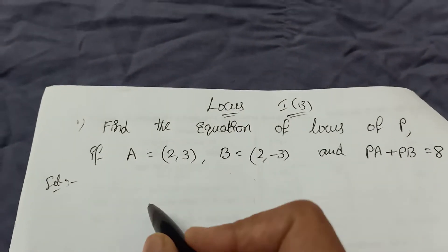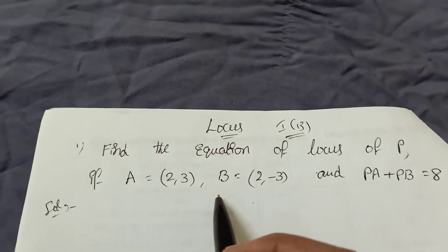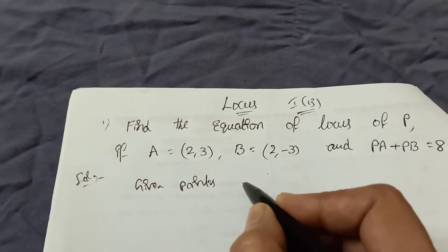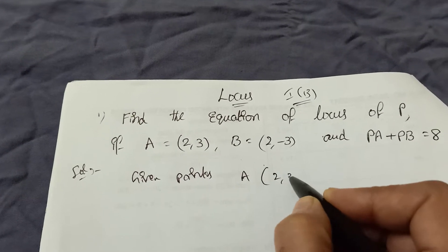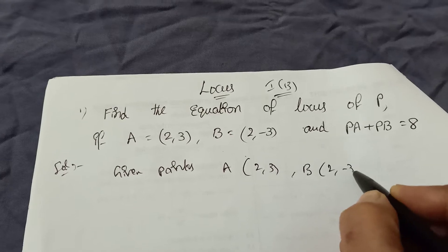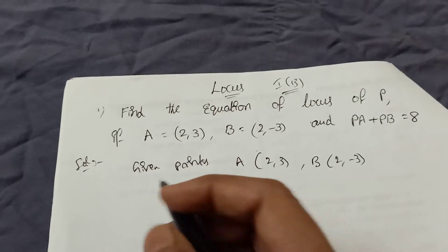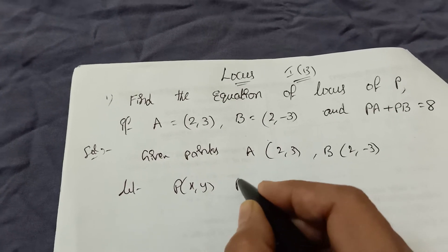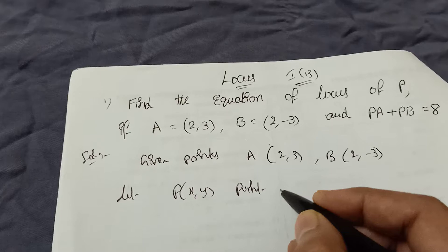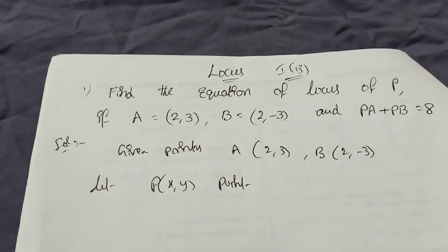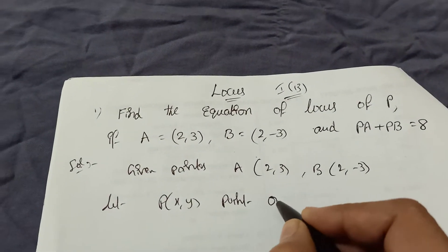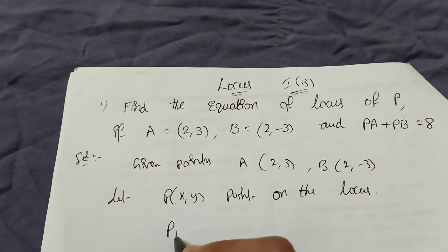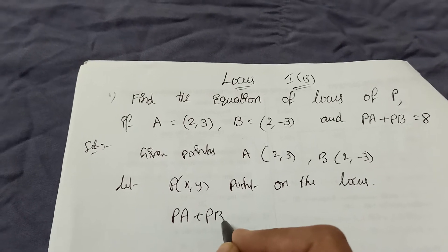Now I am writing the solution. The given points are: A is (2, 3) and B is (2, -3). I am taking P as (x, y) as a point on the locus. The given equation is PA plus PB equals 8.